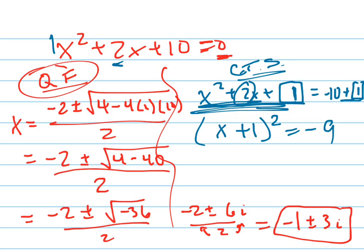How do I get rid of the 2 here? I'm going to try to get the x by itself. I take the square root. What's the square root of -9? 3i. Plus or minus 3i. Don't forget the plus or minus.